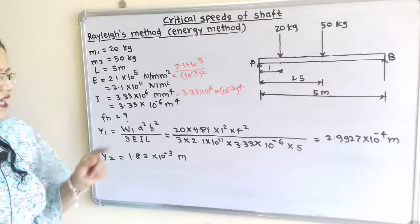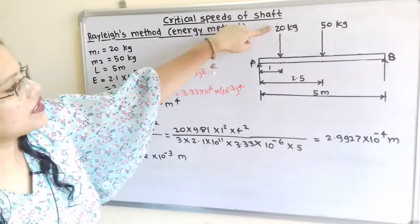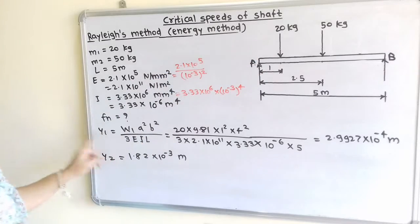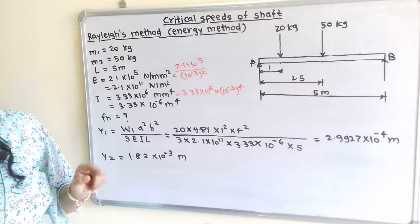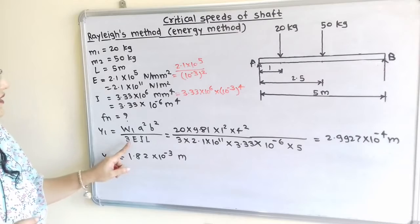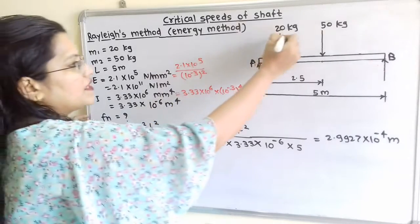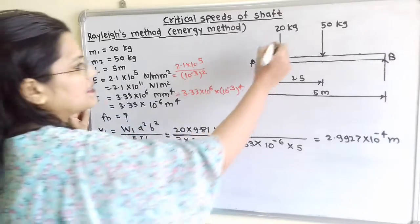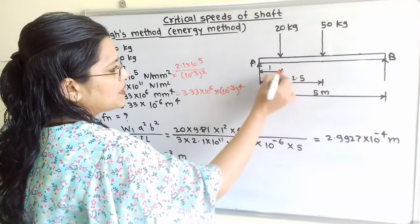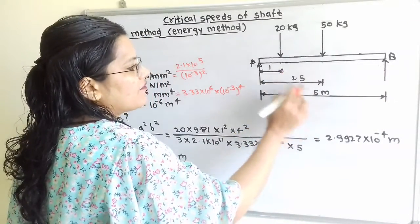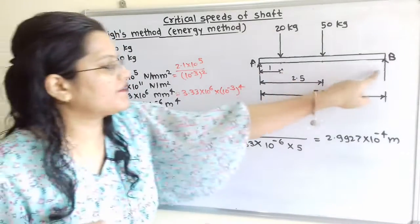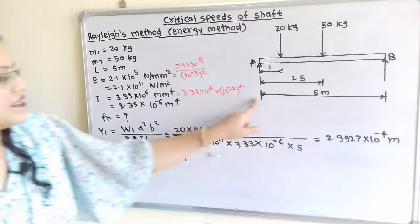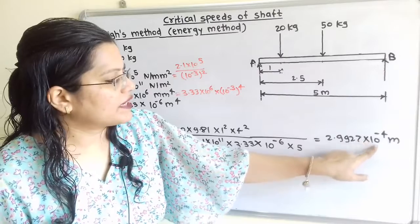We will first calculate the deflection due to the 20 kg load. For Rayleigh's method the deflection at the load point uses the formula Y1 equals W1 A squared B squared divided by 3 E I L. Here W1 equals M1 times G equals 20 multiplied by 9.81. The distance from the left-hand side is A equals 1 meter, and from the right-hand side B equals 5 minus 1 equals 4 meters. So we compute 1 squared times 4 squared divided by 3 times E times I times 5, giving Y1 equals 2.9927 into 10 raised to minus 4 meters.